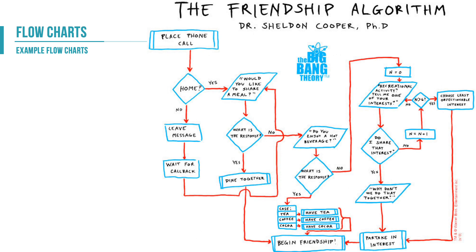A slightly more famous example is the friendship algorithm from The Big Bang Theory: place the phone call — is the person home? If yes, say 'would you like to go for a meal?' If no, leave a message. Within that example we've already used four different types of symbols.